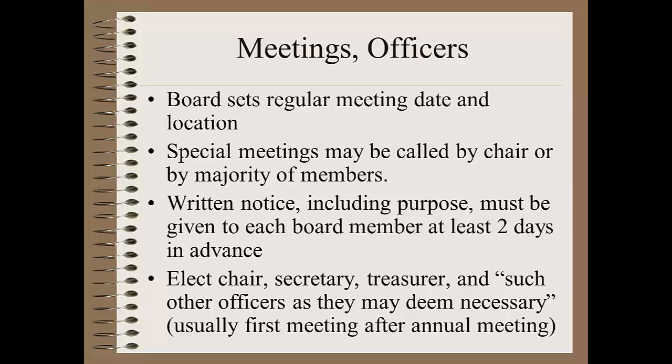Remember, terms expire the first Tuesday of April, so if you meet on the first Monday of the month, that's usually before the newly elected board members take office. The law specifies electing a chair, a secretary, a treasurer, and such other officers as they may deem necessary. One thing I want to be sure and point out is that when election of officers is done, the board should also designate who's going to be the library's representative to the board of the Southeast Kansas Library System. That can be the board president, another board member, or whoever the board chooses.